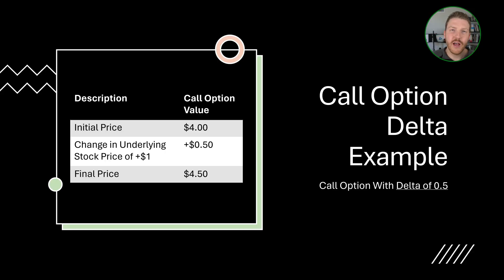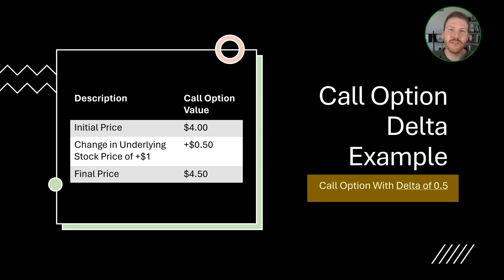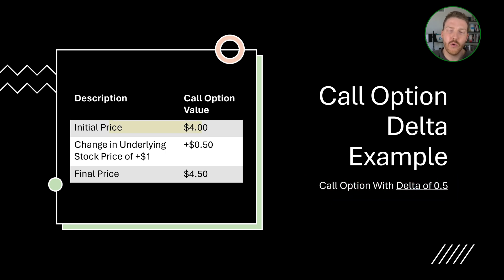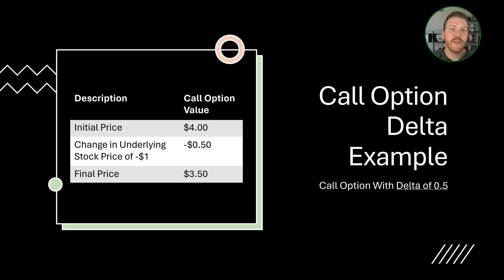Let's dive into an example. Imagine there is a call option underlying a stock. This call option has a delta of 0.5 and currently has a price of $4. If the stock's price goes up $1, then the call option should go up by 50 cents, and the final call option price will be $4.50. However, if the stock's price had fallen by $1, then the option's value would also fall by 50 cents, and the new option price would be just $3.50.